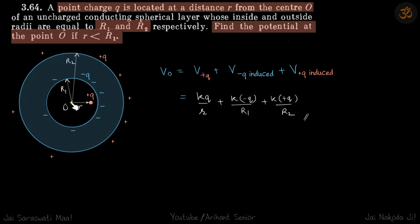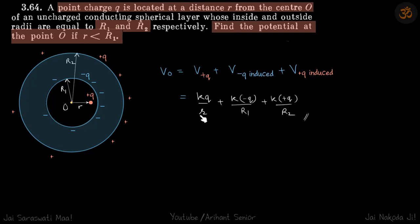Now we need to find the potential at point O. Because of all three charges we can find it. So V_O equals the potential due to plus q, plus the potential due to the induced minus q, plus the potential due to the induced plus q. The potential due to the original plus q is kq over r, since this charge is at a distance r from the center.